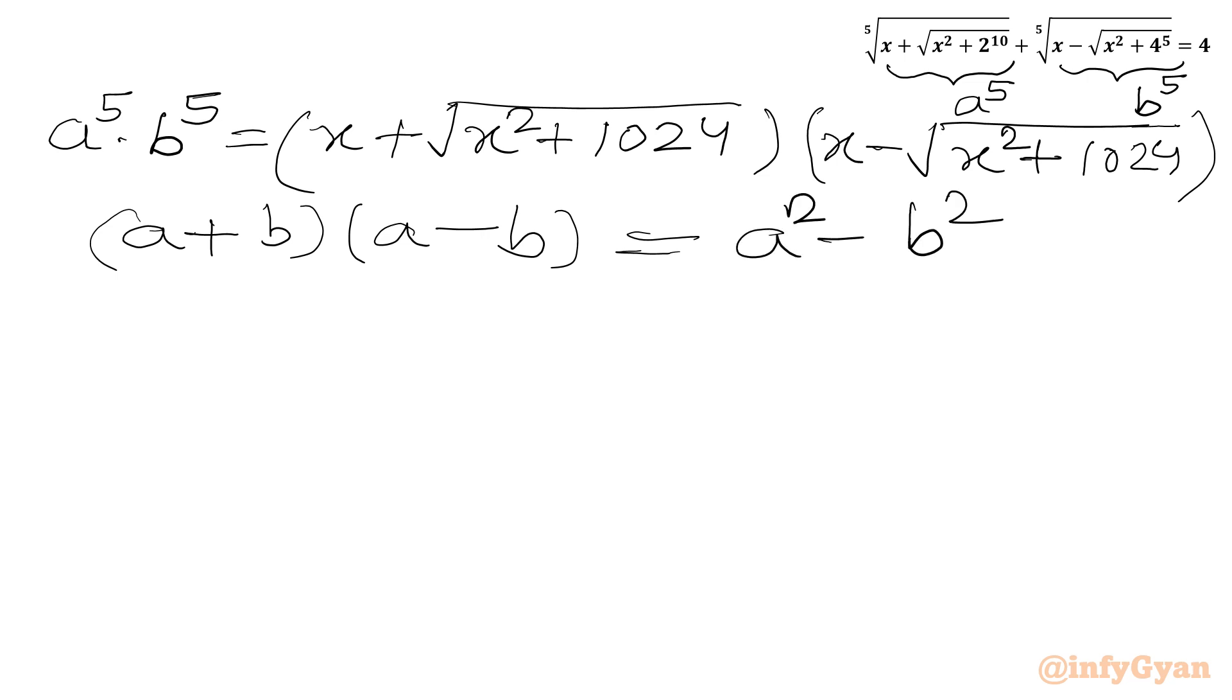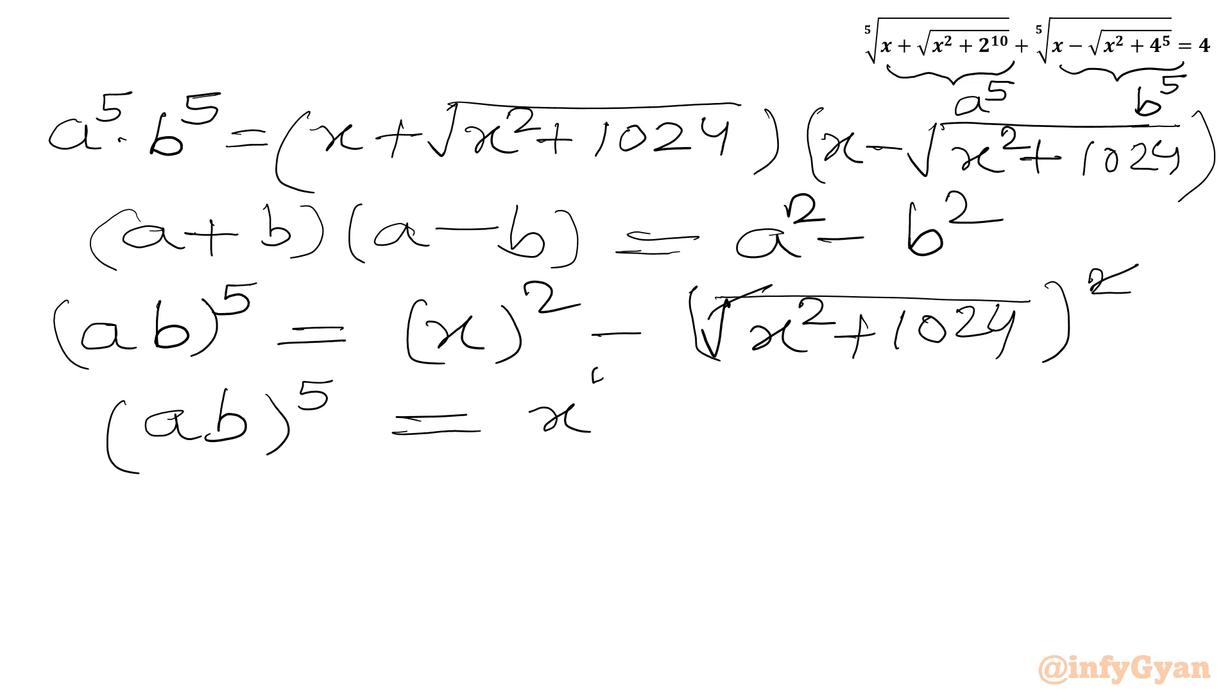Let's apply. So LHS we can write ab whole power 5 equal to a square. x square a is x. So x whole square minus square root of x square plus 1024 whole square. Now square root and square will be over. x square minus 2. So we can write ab whole power 5 equal to x square minus x square minus 1024.